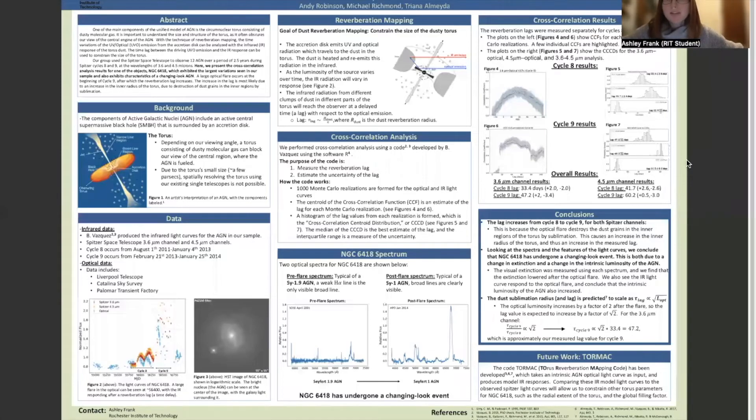I'm Ashley Frank. I'm a sixth year graduate student at Rochester Institute of Technology, and I'm discussing constraining the size of the torus of NGC 6418. In this poster, I present mid-infrared dust reverberation mapping results for the AGN NGC 6418. Our infrared data is from Spitzer during cycles eight and nine, and the optical data is combined from several ground-based telescopes.